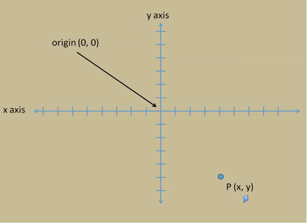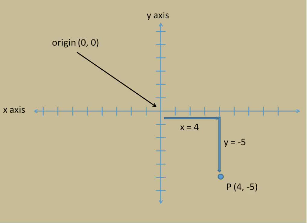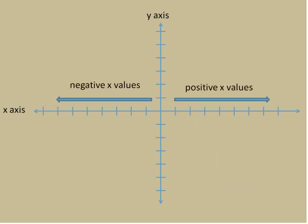Let's go ahead and look at what this point would be. We start at our origin and we move four places to the right and then five places down. We would go one, two, three, four places, and then one, two, three, four, five places down. So our x-value is going to be four — we go four along the x-axis. And our y-value would be negative five because we go down five in the y-direction. So we would call this point (4, -5).